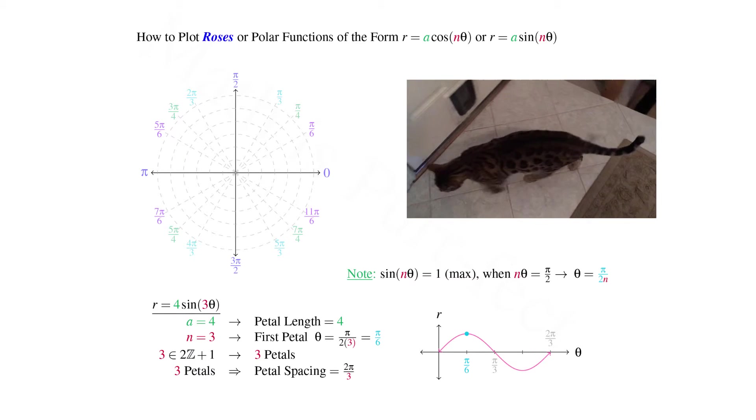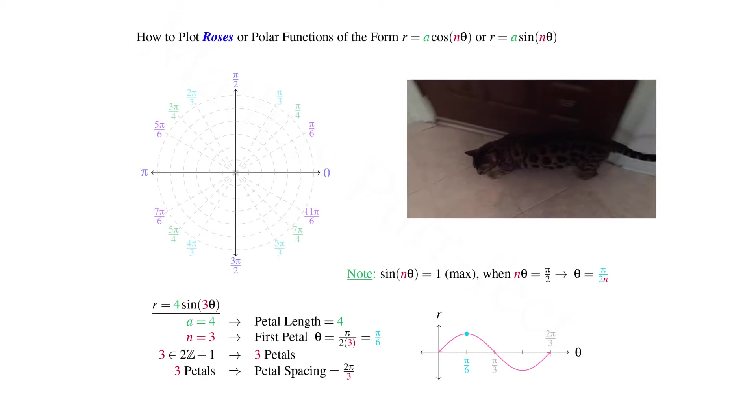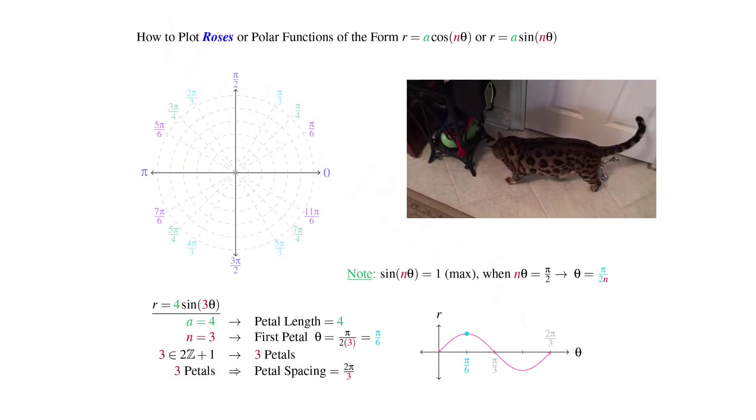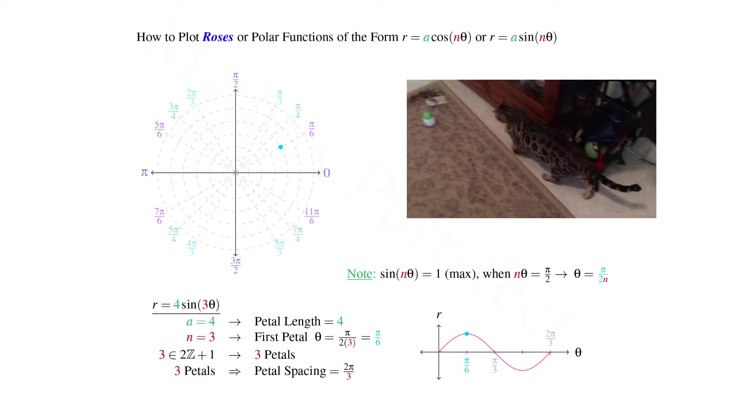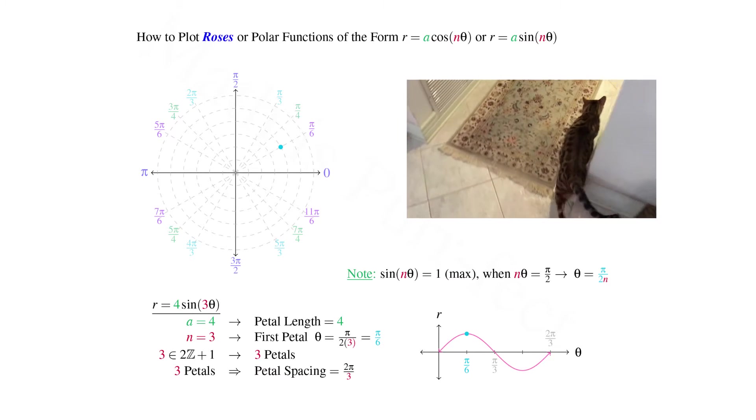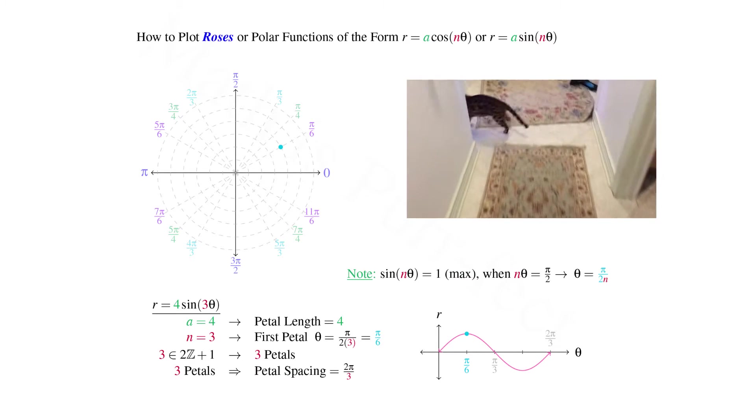Noting where sine attains its maximum altitude, we see that it's at an angle of π/6, the location of our first petal. Let's indicate this on our polar graph with a blue dot at an angle π/6 and a radius of 4 from the pole.